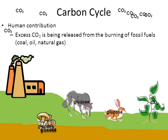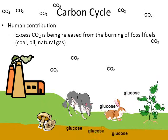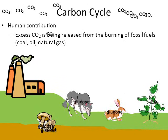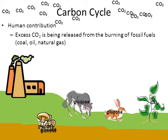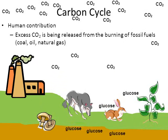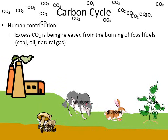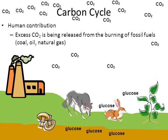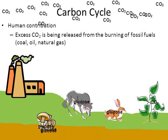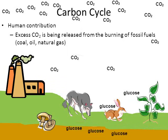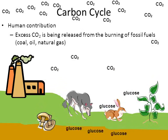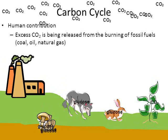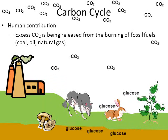The last factor to mention briefly is the human contribution. In the animation, there's a factory in the background giving off a lot of carbon dioxide. The human contribution to the carbon cycle is that excess carbon dioxide is being released into the atmosphere from the burning of fossil fuels — such as coal, oil, and natural gas — which we burn to produce electricity for homes and factories. The Earth has never seen this large an amount of carbon dioxide being released into the atmosphere.